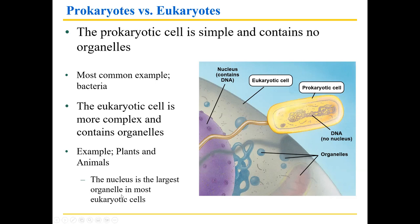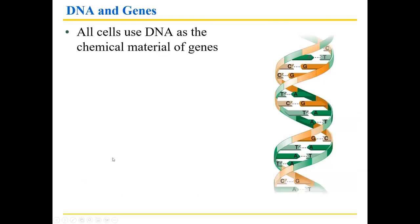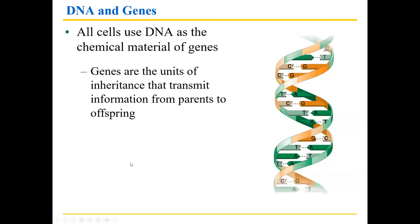The nucleus is the largest organelle in most eukaryotic cells. All cells use DNA as the chemical material of genes. Not all viruses do — that's why they're not cells and not considered alive. All living cells use DNA as the chemical material of genes, which carry the traits that make us who we are. Genes are the units of inheritance that transmit information from parents to offspring, all the way from bacteria up to humans.